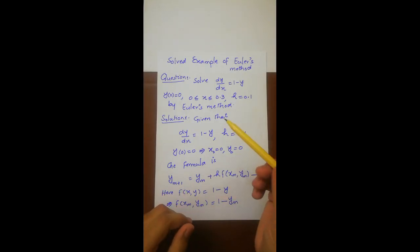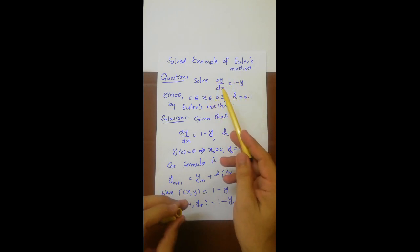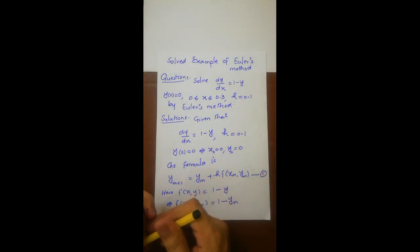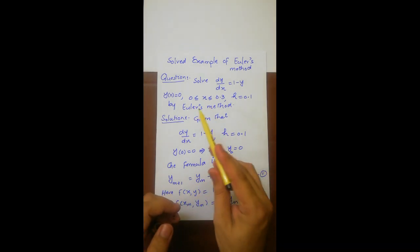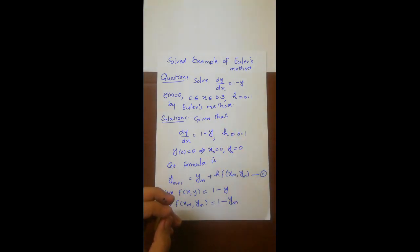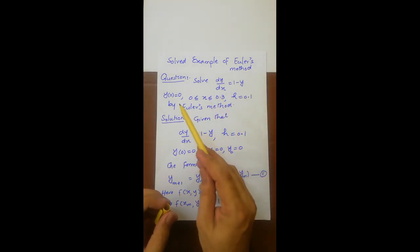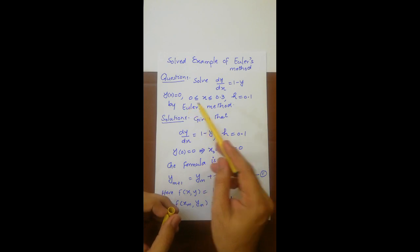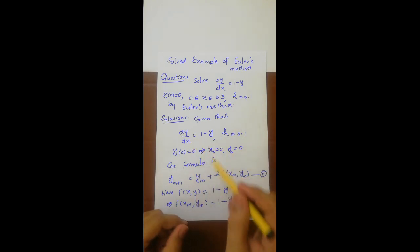Assalamu alaikum students. In this video we will solve an example of an ordinary differential equation by using Euler's method. In the last video we discussed the derivation and proof of Euler's method, and in this video we will solve an example. The question is: solve dy/dx = 1 - y with initial condition y(0) = 0, where x is between 0 and 0.3, and h = 0.1.